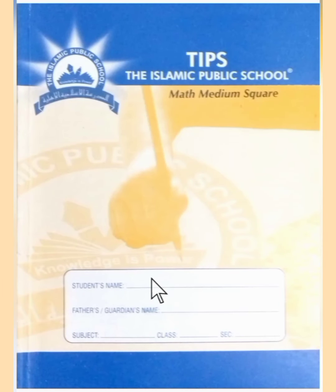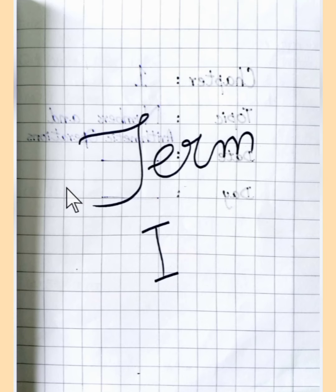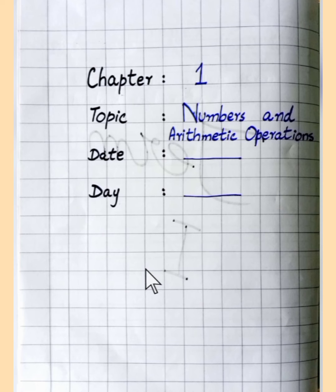Students, take out your notebook and write your name, father's name, subject, class, and section. Open your notebook and maintain your index — write 'Term 1' and kindly maintain your index on time. Make a title page for Term 1, and on the second page make a title page for chapter number 1, topic: Numbers and Arithmetic Operations. Put the date and day also.